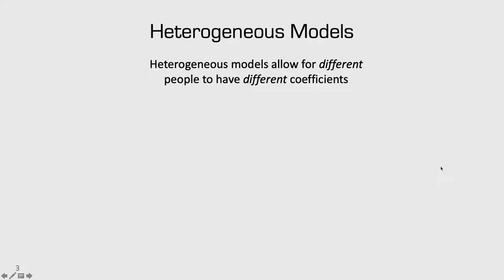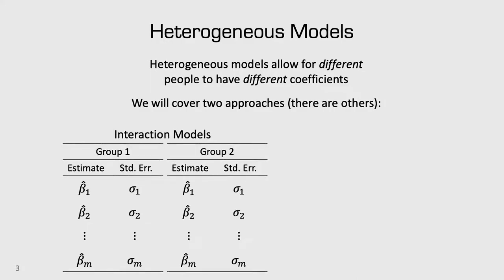For heterogeneous models, we allow different people to have different types of coefficients. In this class, we'll cover two different approaches, although there are lots of different types. The most extreme thing you could do is run a separate model for every single person, but that usually isn't feasible because we often don't have enough information about each person — our utility models might have ten or more coefficients, yet each respondent might have only answered a few choice questions. So instead, one thing we can do is group people together and estimate different models for different groups.